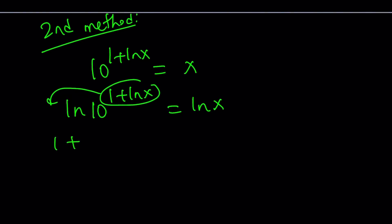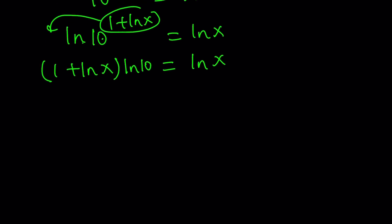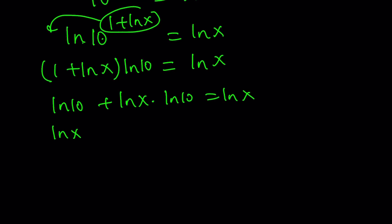But this time ln 10 is not going to be 1, because they're different numbers — this is base e and that's 10. So now we can write this as 1 plus ln x times ln 10 equals ln x. Notice that ln x can be distributed, so we get ln 10 equals ln x, and we can put the terms containing ln x on the same side and factor out.